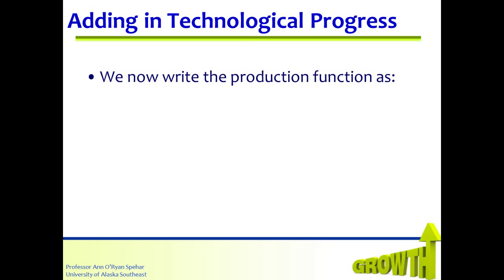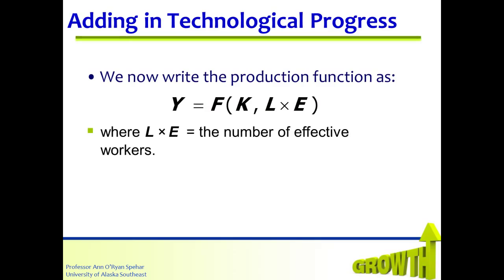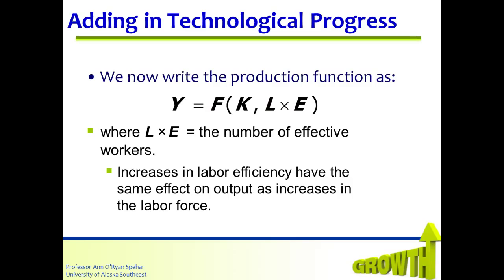We now write the production function as output equal to a function of K and L times E. Notice that L times E is going to equal the number of effective workers. E, in essence, is going to make labor more productive — it's going to augment labor. Increases in labor efficiency will have the same effect on output as increases in the labor force. Technology makes each unit of labor more productive, able to produce more output per unit of labor, in much the same way as simply adding more units of labor.